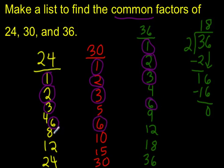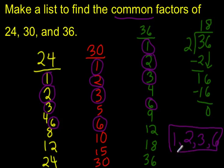How about 8? No. 9? Not every group. 10? No. 12? Nope. And actually, there are no other common factors. So the common factors are the ones that I've circled in purple here. The common factors of 24, 30, and 36 are 1, 2, 3, and 6. Those are the common factors.